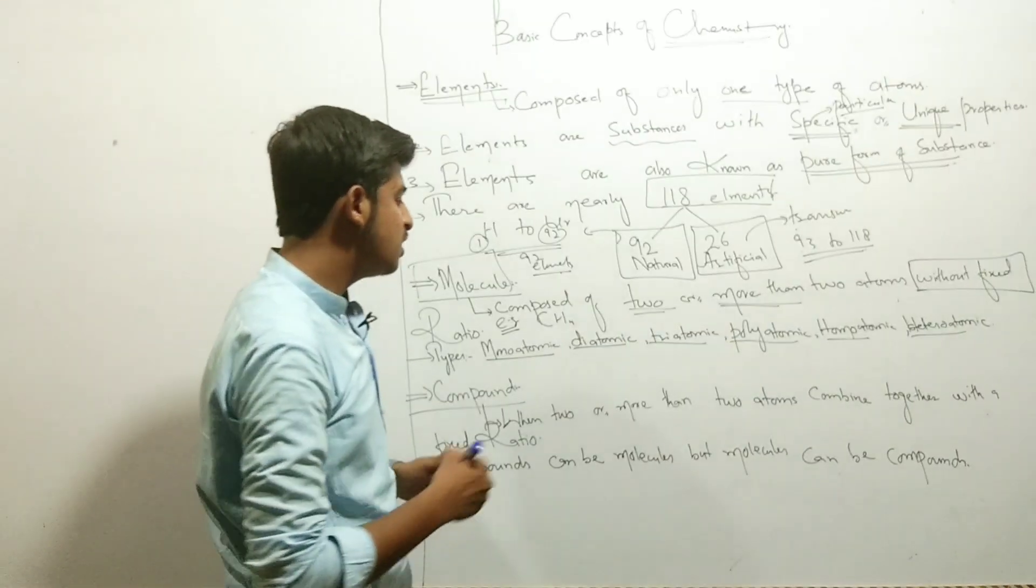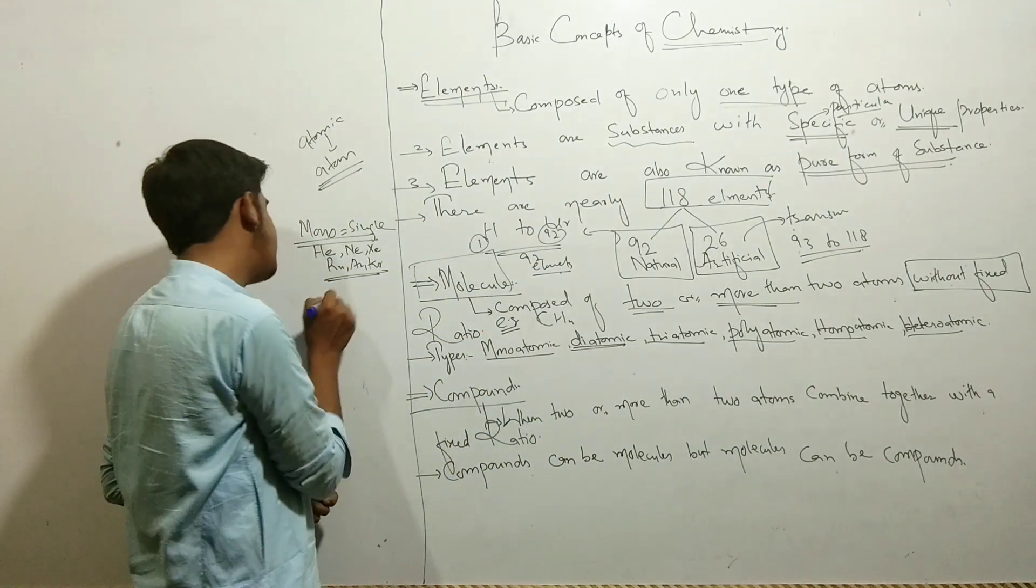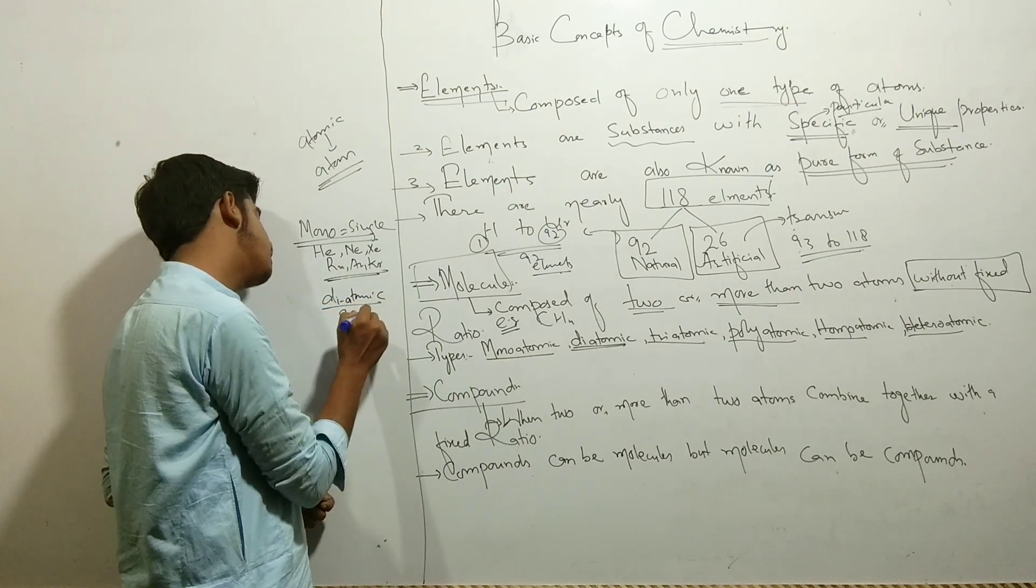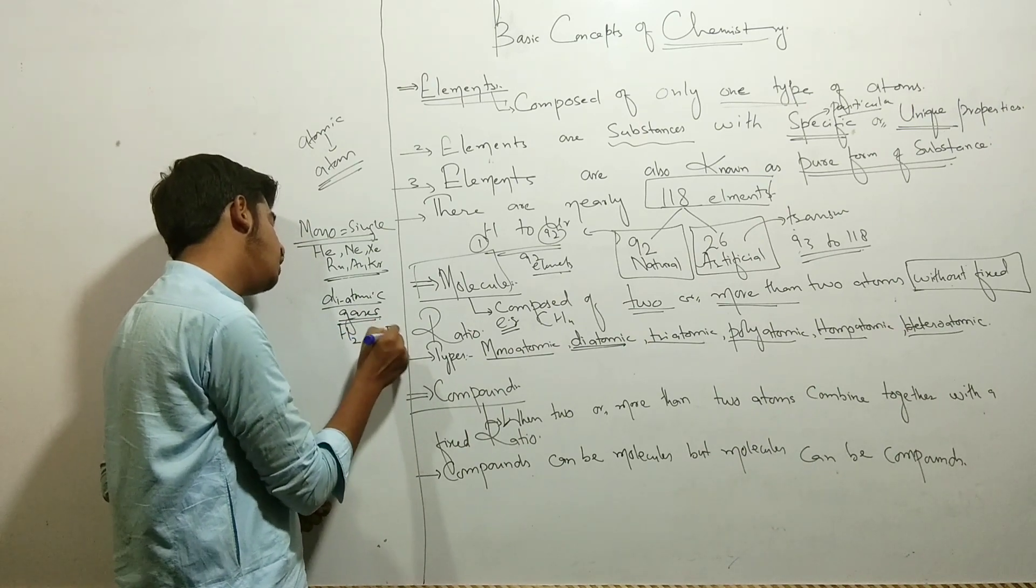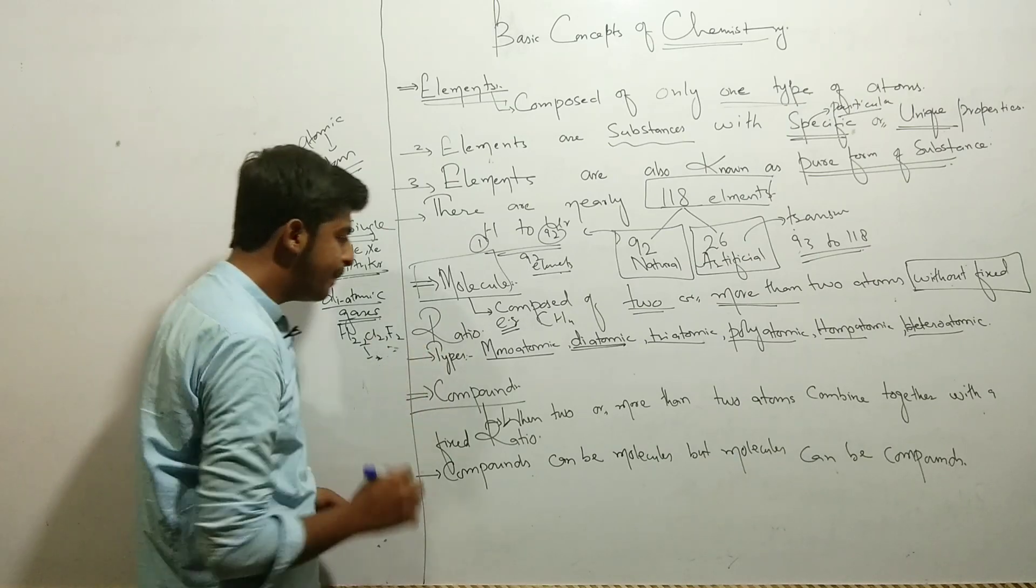Diatomic molecules are composed of two atoms. Mostly gases are diatomic because they are reactive, therefore they are diatomic. Examples include hydrogen, chlorine, fluorine, iodine, and bromine. So these are the diatomic molecules.